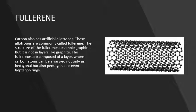Fullerene. Carbon also has artificial allotropes. These allotropes are commonly called fullerene. The structure of fullerenes resembles graphite, but it is not in layers like graphite. Fullerenes are composed of a layer where carbon atoms can be arranged not only as hexagonal, but also pentagonal or even heptagon rings.